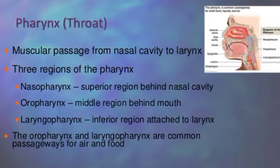There are three regions of the pharynx. First, the nasopharynx — the superior region behind the nasal cavity. Second, the oropharynx — the middle region behind the mouth. Third, the laryngopharynx — the inferior region attached to the larynx. The oropharynx and laryngopharynx are common passageways for both air and food.